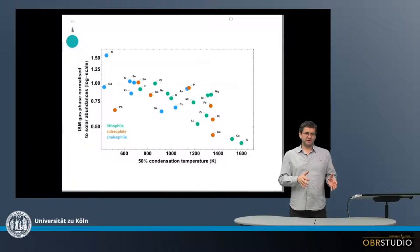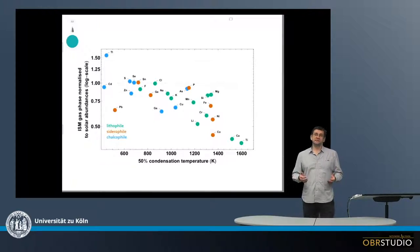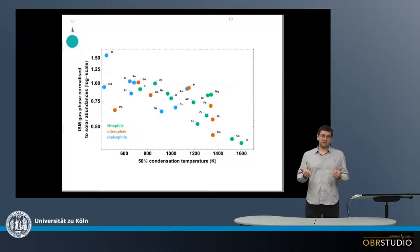For example, when we look at the bulk composition of chondrites, their element patterns indicate that maybe this might have been established by incomplete condensation of the elements or some partial evaporation.